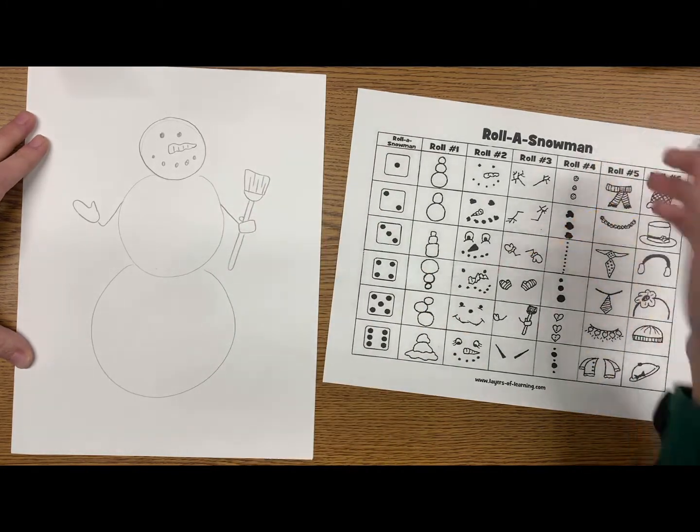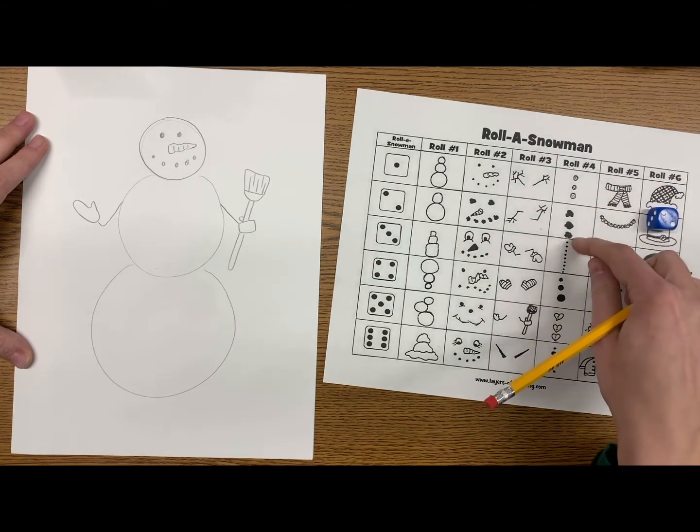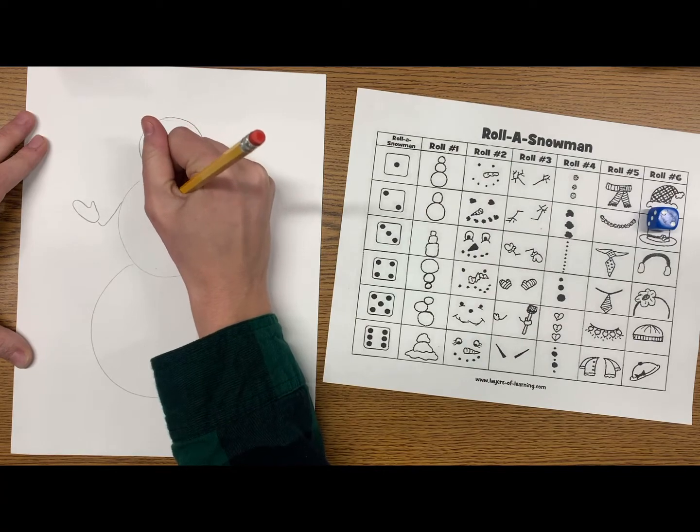Roll number four is the buttons. I got the two, so I'm coming down one, two, and drawing those on my snowman.